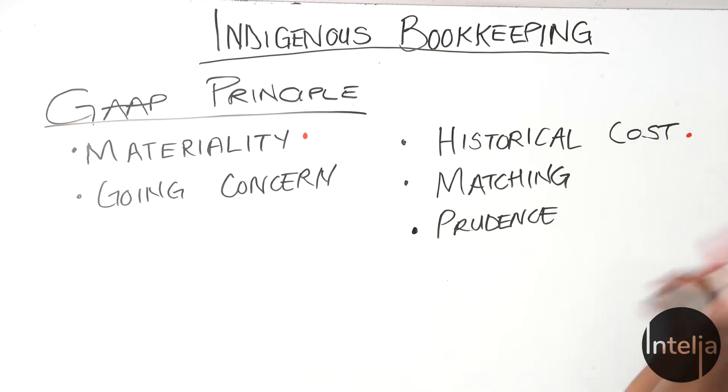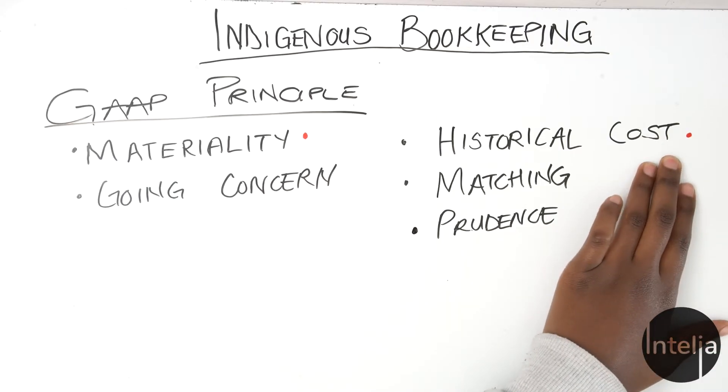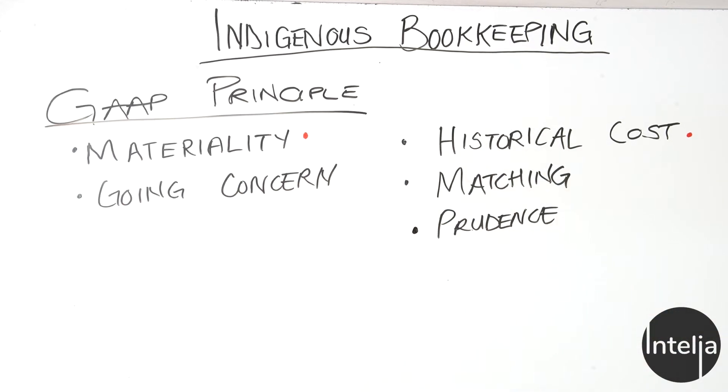The next one is the historical cost principle. This basically speaks to when a business acquires assets — they should always be recorded at the cost price, not at their depreciated or appreciated price. You should already know about depreciation from Grade 8. Basically, assets should be recorded at their historical cost.